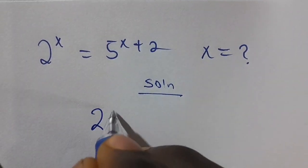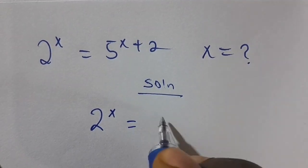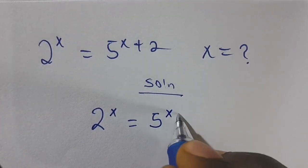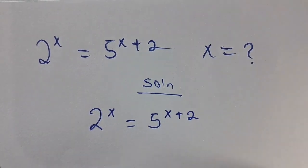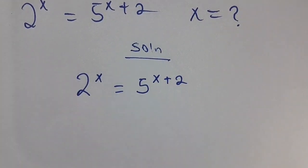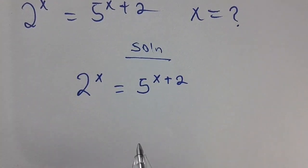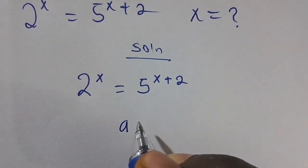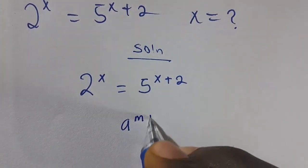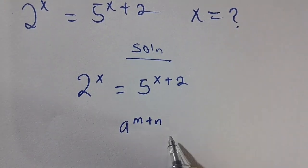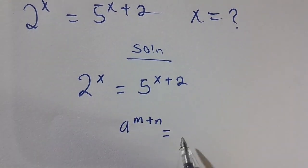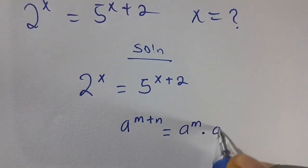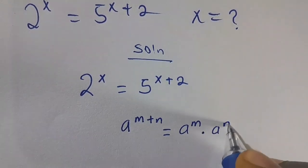We have 2 raised to the power x equals 5 raised to the power x plus 2. To solve this problem, let's take note that when you have a raised to the power m plus n, this can be simplified to be a raised to the power m multiplied by a raised to the power n.